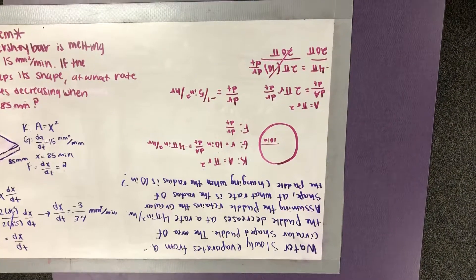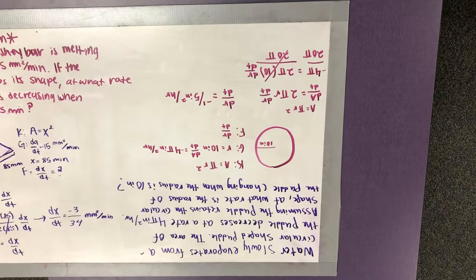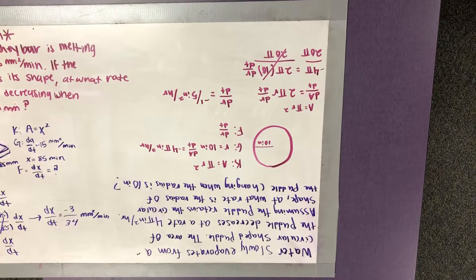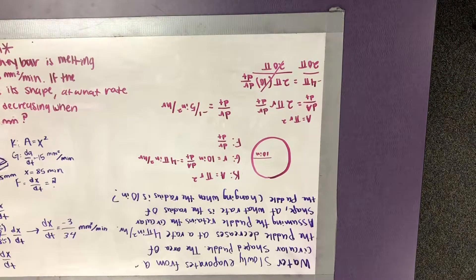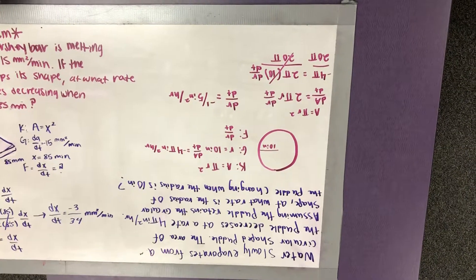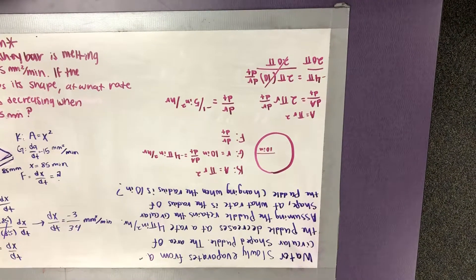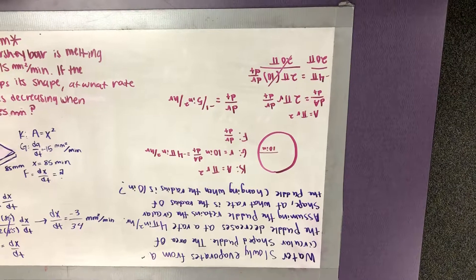So, for our given equation, we had equation number 4, and it says that water slowly evaporates from a circular-shaped puddle. The area of the puddle decreases at a rate of 4 pi inches squared per hour. Assuming the puddle retains the circular shape, at what rate is the radius of the puddle changing when the radius is 10 inches?